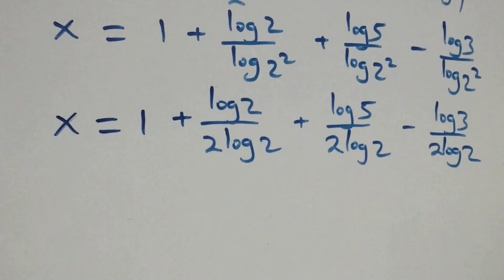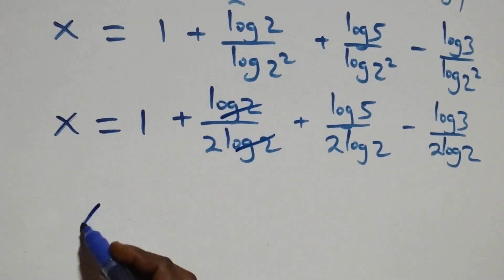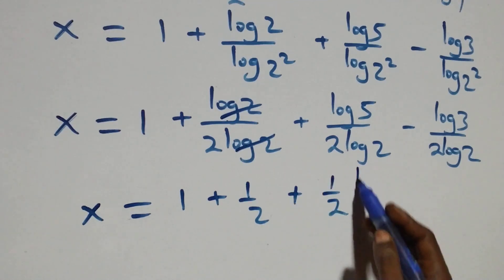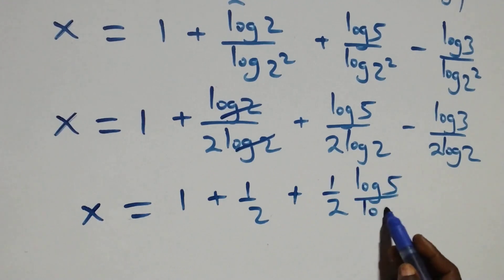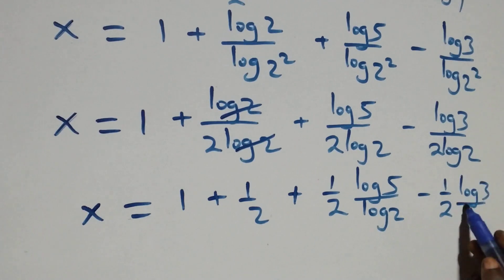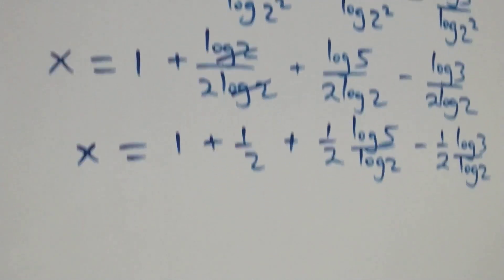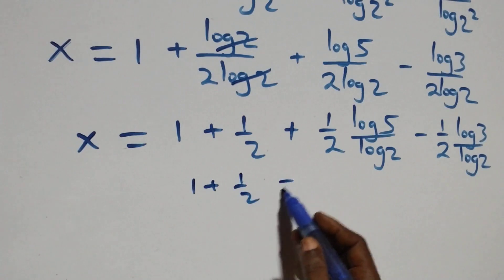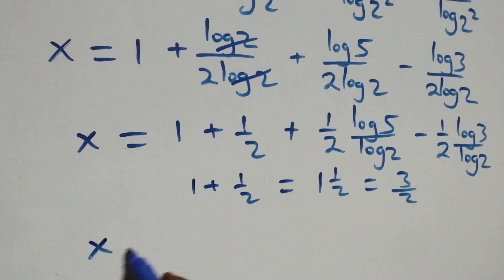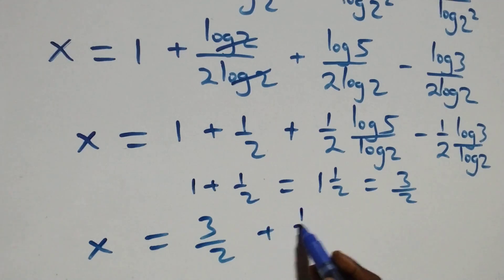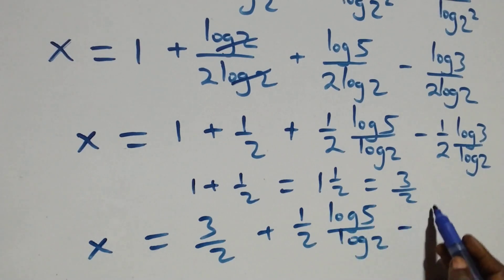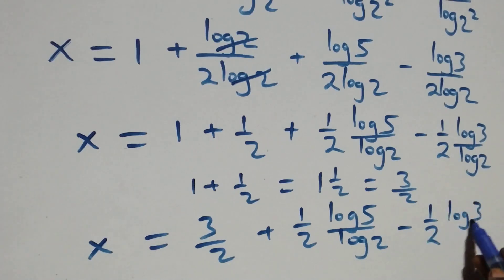Here, log 2 cancels in the first fraction leaving 1 over 2, so x equals 1 plus 1/2, plus (1/2) times (log 5 over log 2), minus (1/2) times (log 3 over log 2). And 1 plus 1/2 equals 3/2, so x equals 3/2 plus (1/2)(log 5 over log 2), minus (1/2)(log 3 over log 2).